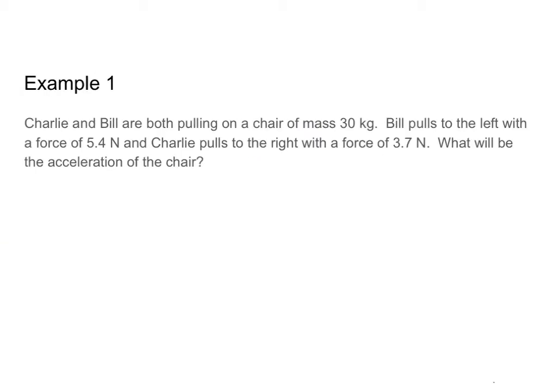Let's look at an example problem. Charlie and Bill are both pulling on a chair of mass 30 kilograms. Bill pulls to the left with a force of 5.4 newtons, and Charlie pulls to the right with a force of 3.7 newtons. What will be the acceleration of the chair? The first step here is going to be to draw a picture.